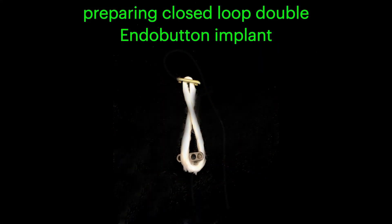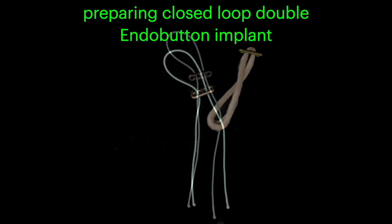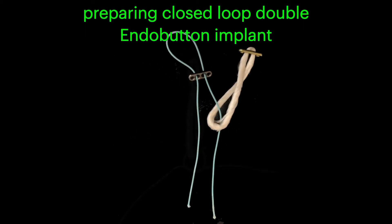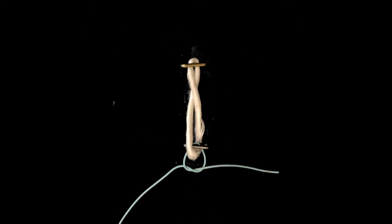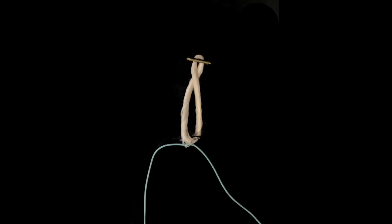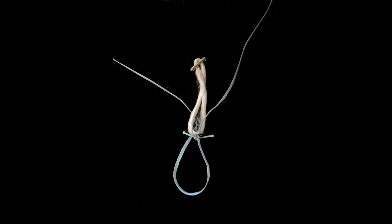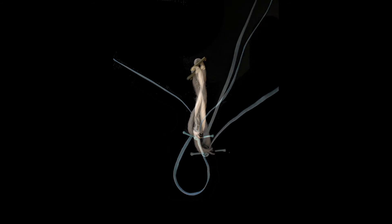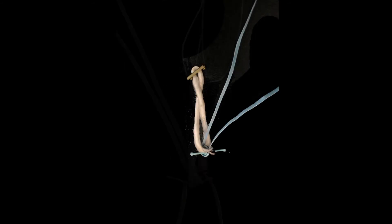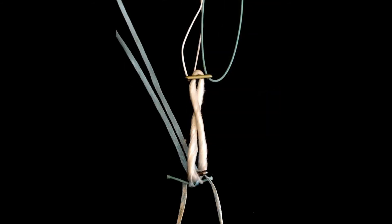The implant is now prepared at the back table. A suture is passed through the near holes of a free endobutton and then tied around the loop so that the loop goes around the button. An ultra tape is then passed through the near holes of the endobutton. A rescue stitch is then passed in the opposite direction of the far holes so that the button position can be controlled during passage.